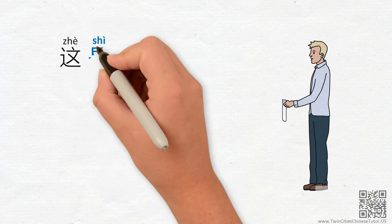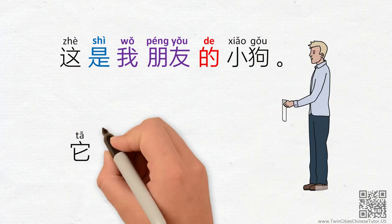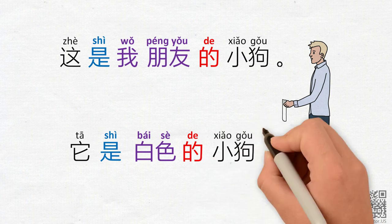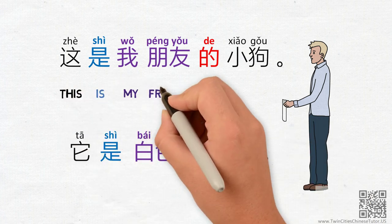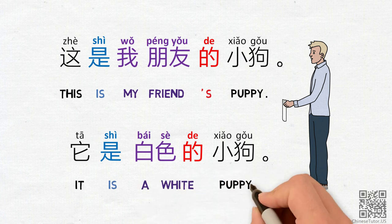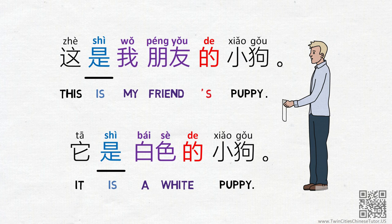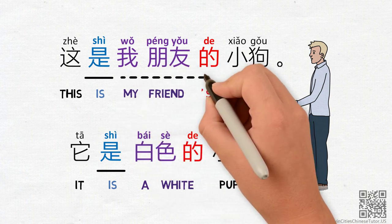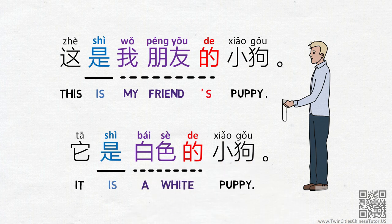For example, if Loic says 这是我朋友的小狗 and 它是白色的小狗, he is saying: 'This is my friend's puppy. It is a white puppy.' Here, 是 is translated as 'is', and 的 clarifies that the puppy belongs to my friend and that the puppy is white.